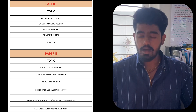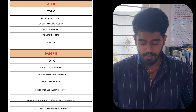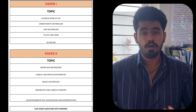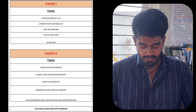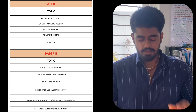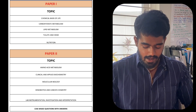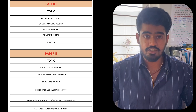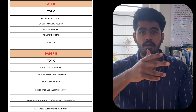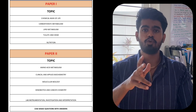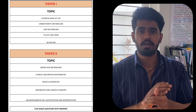In paper 2, you have to study from: amino acid metabolism, clinical and applied biochemistry, molecular biology, xenobiotics and cancer chemistry. You also have to study lab instrumentation and investigation and interpretation — though it can come in both papers and is not confirmed. If you are struggling in the last minute, just have a basic idea about those topics or even skip them — they are of very low priority.